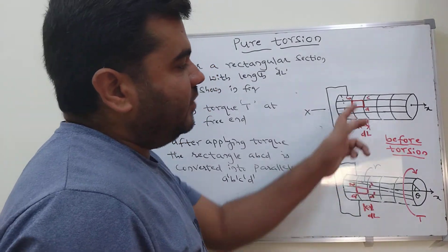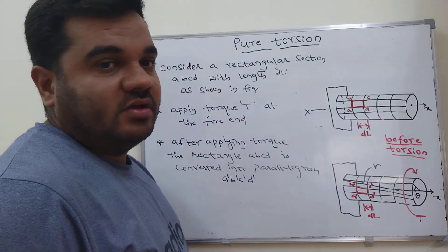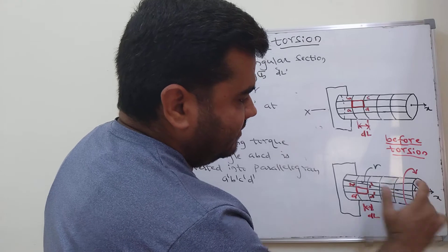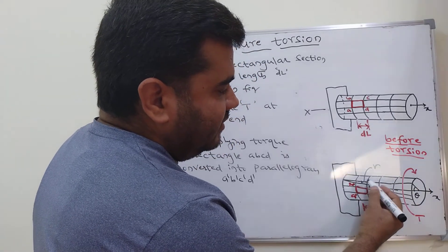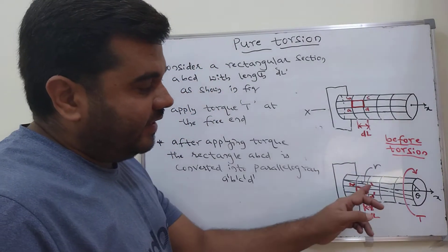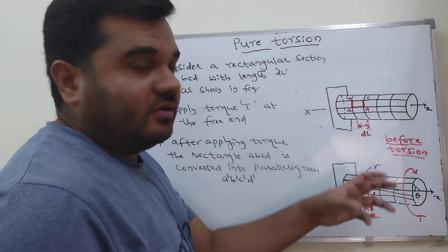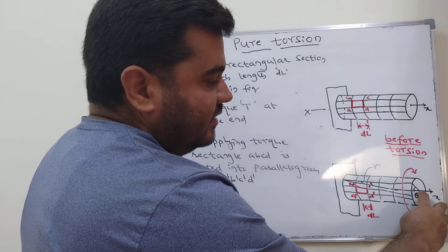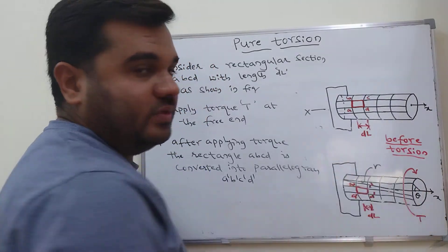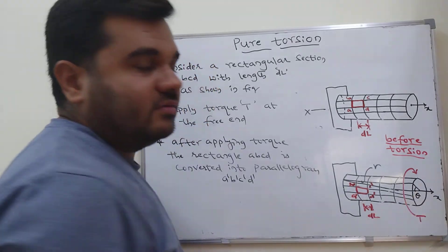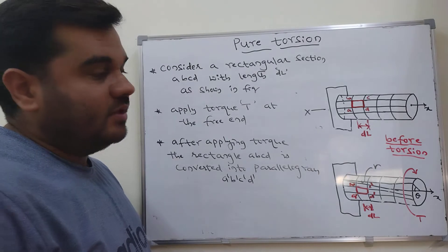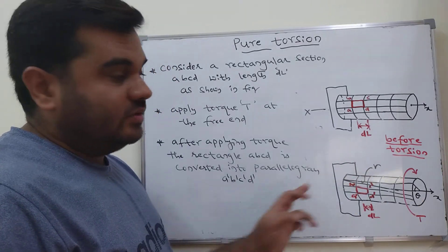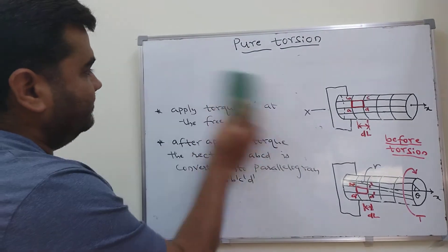After applying the torque, there are changes in the longitudinal lines and circumferential lines, and we get two important terms. One angle you will get is called shear strain. Also, after applying the twist, at the end of the portion from the center, there is another change in the longitudinal lines — that angle is called angle of twist. So two important terms: shear strain and angle of twist.